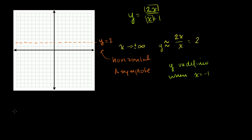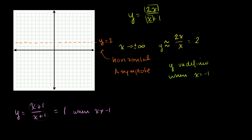Let me give you a quick example. If I have y is equal to x plus 1 over x plus 1, you might say when x is equal to negative 1 the graph is undefined. And you'd be right — you get 0 over 0. But if you assume x does not equal negative 1, you can divide numerator and denominator by x plus 1, and this equals 1 when x does not equal negative 1.